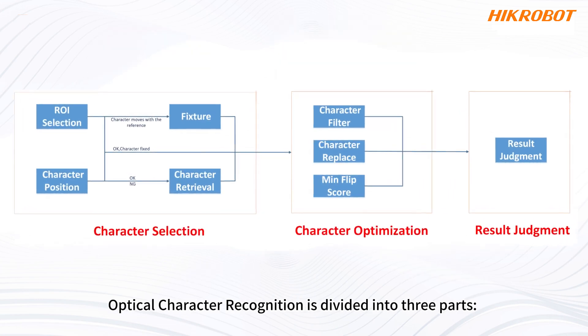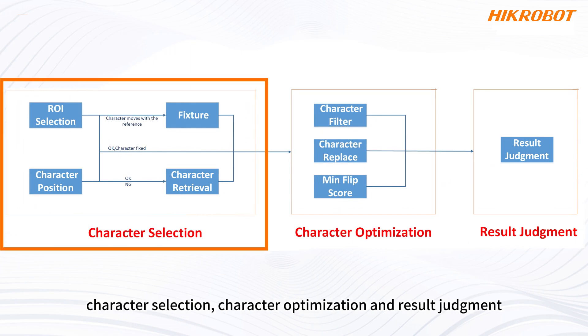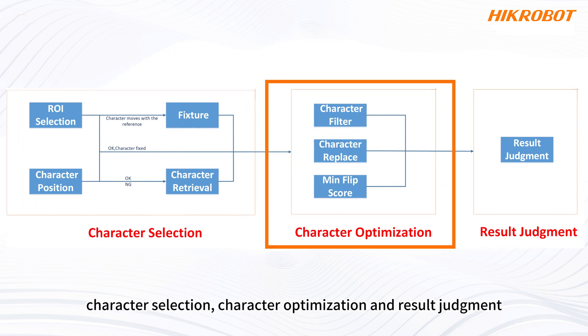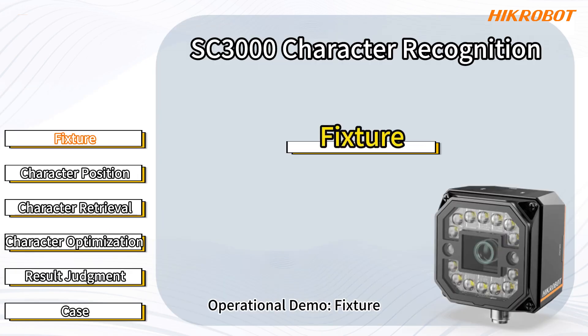Optical character recognition is divided into three parts: Character Selection, Character Optimization, and Result Judgment. Operational Demo: Fixture.